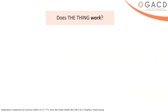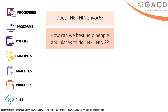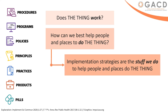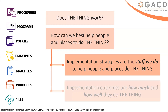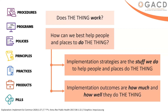Put very simply, the 'thing' is the intervention, the practice, the innovation, or the program. Efficacy and effectiveness research studies really seek to understand whether the thing works. Implementation research looks at how best to help people in places do the thing — or implement the thing — that could make a difference and improve health outcomes. Implementation strategies are what we need to actually do and how we do them to help people, settings, and services achieve better implementation. Implementation outcomes are how much and how well we do those things in conducting the implementation.